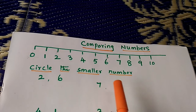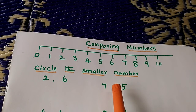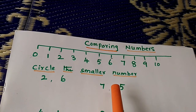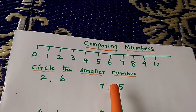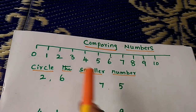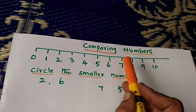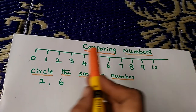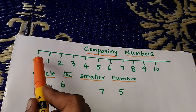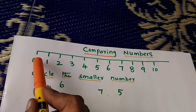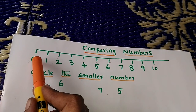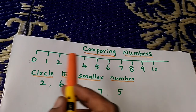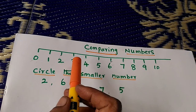Circle the smaller number. When 2 numbers are compared on the number line, the number closer to 0 is smaller than the other number.